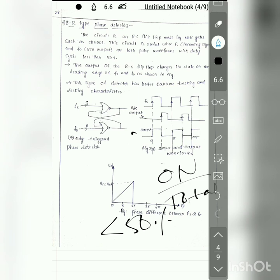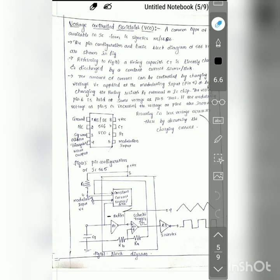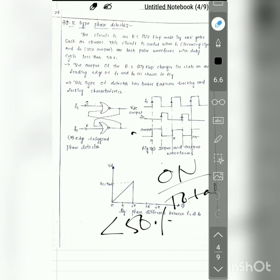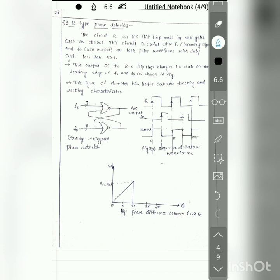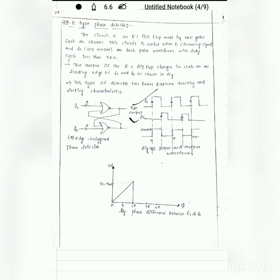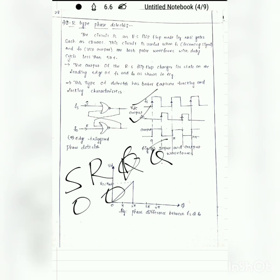To understand the SR flip-flop operation, consider its truth table. When S = 0, R = 0, the output is unchanged (previous state). When S = 0, R = 1, the output Q = 0. When S = 1, R = 0, the output Q = 1. When both S = 1 and R = 1, that is an invalid state.